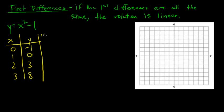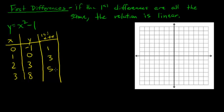Now let's add our first differences column. The difference between negative 1 and 0 is 1. Between 0 and 3 is 3. And between 3 and 8 is 5. Are those numbers all the same? No. So is it linear? No — it is non-linear, because the numbers are not all the same.